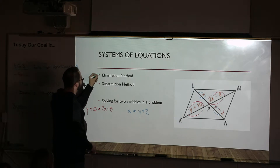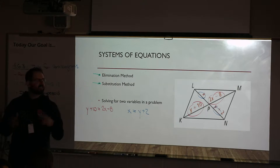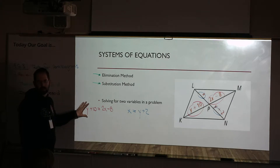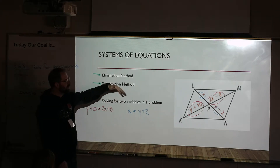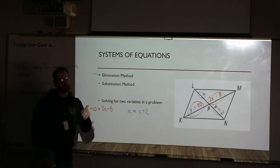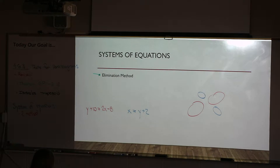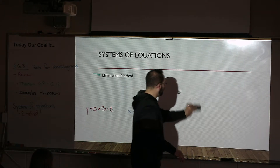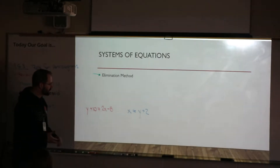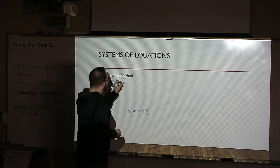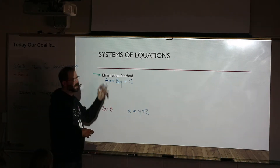It's a system because when I rearrange these equations, nothing cancels out — I'll still have X's and Y's in each equation. There are two methods for solving, and I don't care which you prefer — they give you the same result. My goal is to show you both methods so you can pick the one you like. Does everyone understand how I set these up using the basic properties?